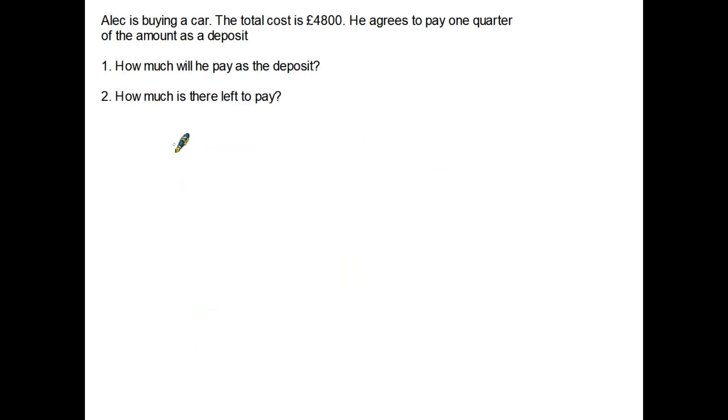Another question here. Alec is buying a car, the total cost is £4,800. He agrees to pay one-quarter of the amount as a deposit. So the questions we're being asked is how much will he pay as the deposit, and how much is there left to pay? So one-quarter of the amount we simply write as one-quarter of 4,800. So again, I'm never going to move away from my golden rule. Step one, divide by four. 4,800 divided by four equals 1,200.